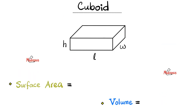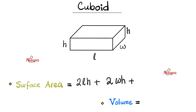Next, the cuboid. The cuboid is made of six rectangles. For the surface area, you need: 2 times L times H (for the front and back faces), plus 2 times W times H (for the left and right faces), plus 2 times L times W (for the top and bottom faces). This is how you find the surface area of the cuboid.